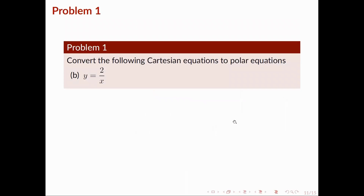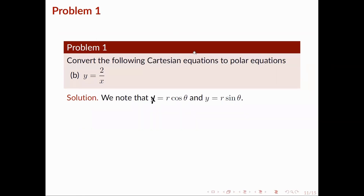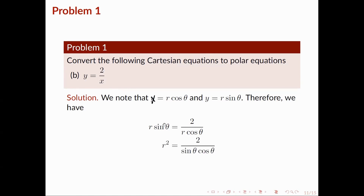Next, we have y = 2/x. We note that x = r·cos(theta) and y = r·sin(theta). Upon replacing y with r·sin(theta) and x with r·cos(theta), we have r·sin(theta) = 2 / (r·cos(theta)). Multiplying both sides by r and dividing both sides by sin(theta), we obtain r² = 2 / (sin(theta)·cos(theta)).